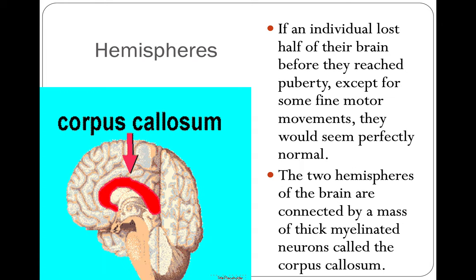If an individual lost half of their brain before they reach puberty, except for some fine motor movements, they would seem perfectly normal. Sometimes this has to happen — we perform what is referred to as a hemispherectomy. The reason is that if they have epilepsy usually in one side of the brain, that portion may be removed because they are getting too many electrical impulses making them non-functional. This is a last-ditch effort to slow down the epilepsy, but it's a good way of controlling it. Normally individuals don't have that severe of epilepsy, so a hemispherectomy is relatively rare.